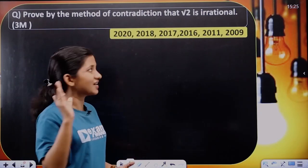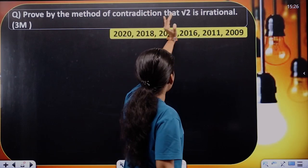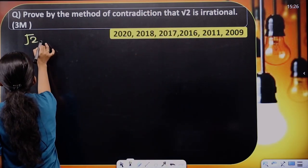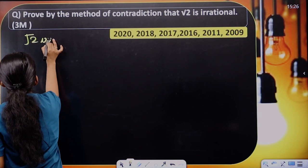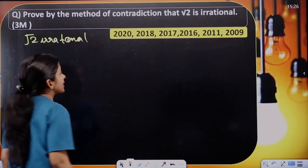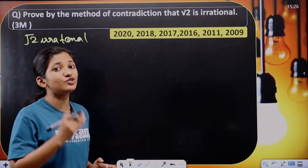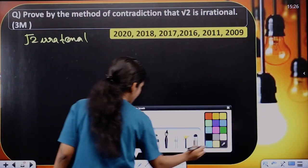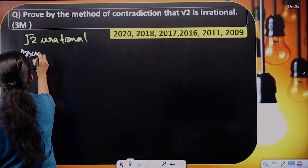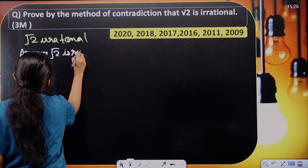So I will solve this question. Prove that Root 2 is irrational by the method of contradiction. If Root 2 is irrational, first we assume that Root 2 is rational. So we assume: Assume Root 2 is rational.